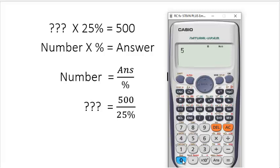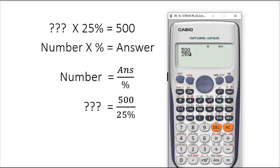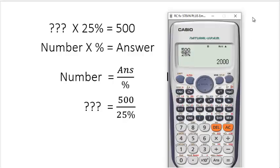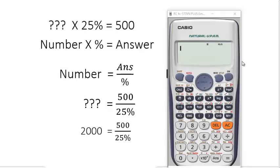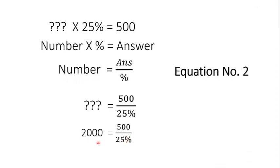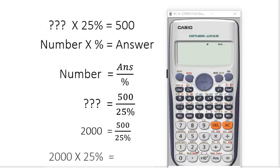Now, we will divide 500 by 25%. So, we get 2000. Means 500 is 25% of 2000. Or 2000's 25% is 500. Let's check it: 2000 multiply by 25% equals to 500.